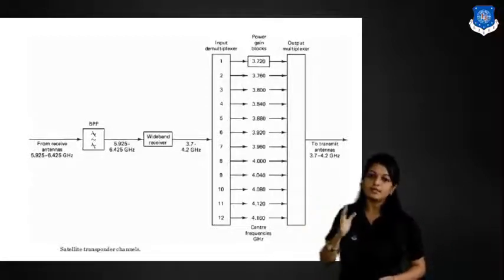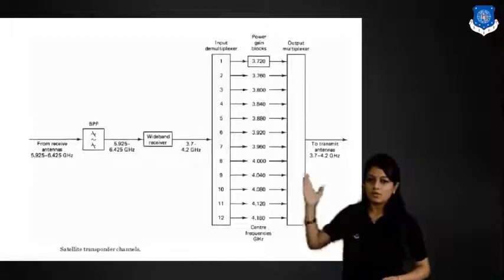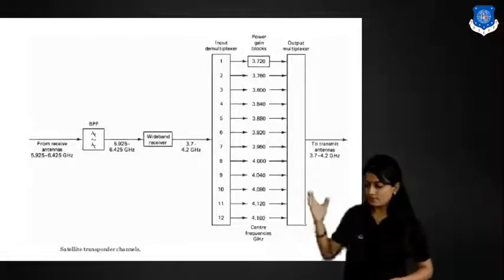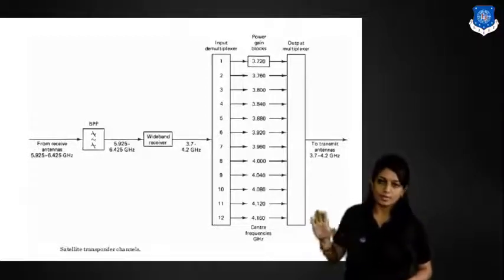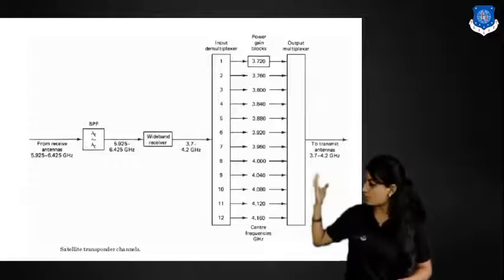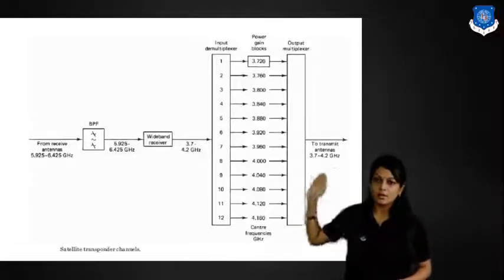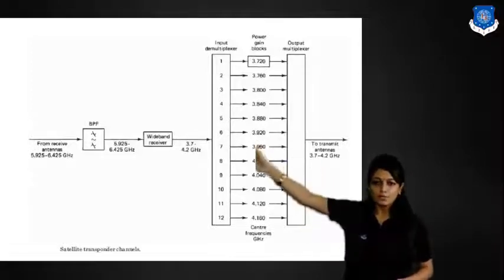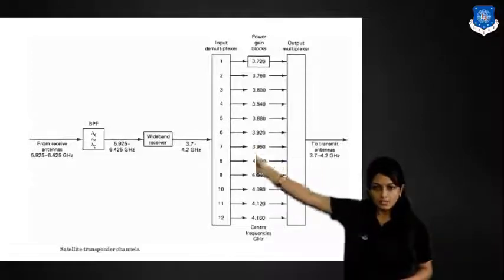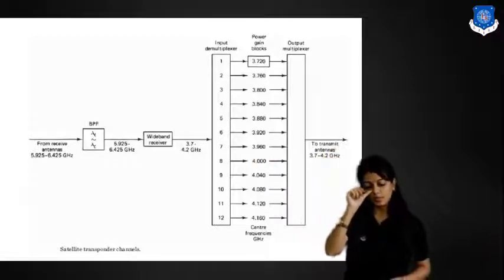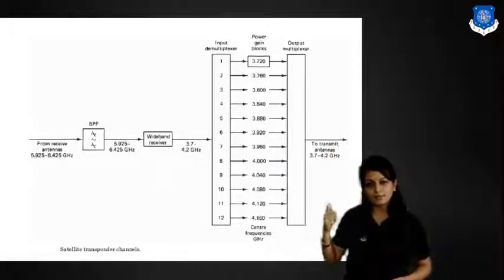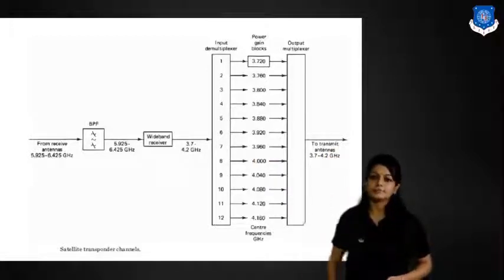Whatever frequency is present, it is down converted. The output frequency is around 3.7 to 4.2 GHz. Input frequency was around 6 GHz and output is around 4 GHz — so it is C band.